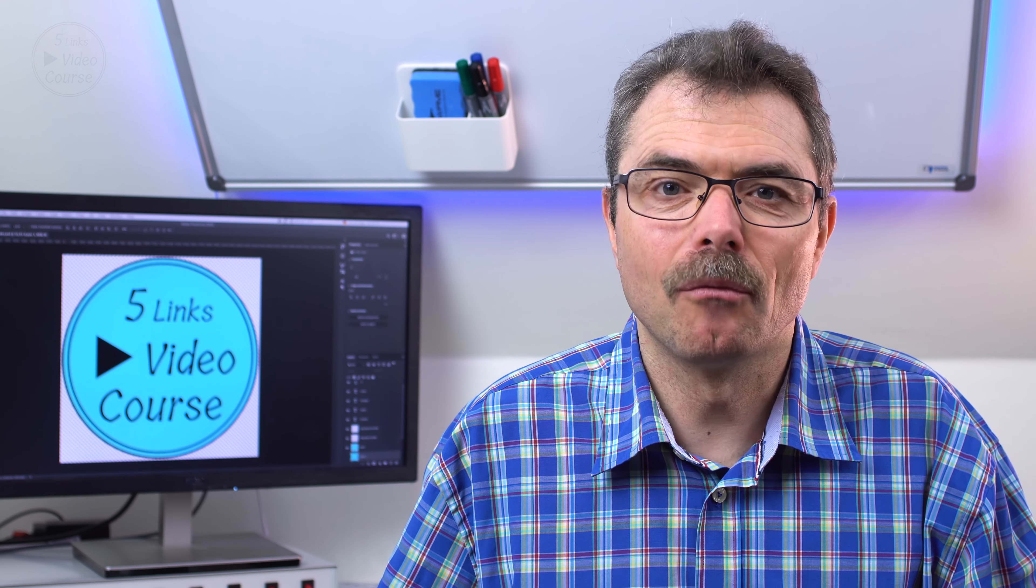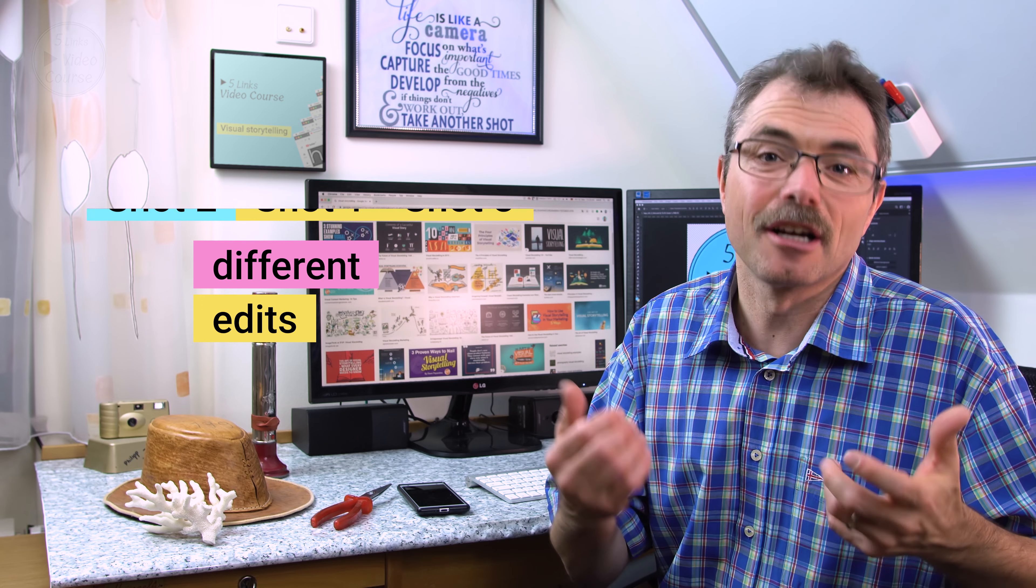Edit the 3 different shots in different versions. For example, your first edit could be shot 1, 2 and 3. And then a second version could be shot 1 then shot 3 then shot 2. And then there is the other option of first shot 2 then 1 and 3. So you have different versions and compare them and see how each story goes.